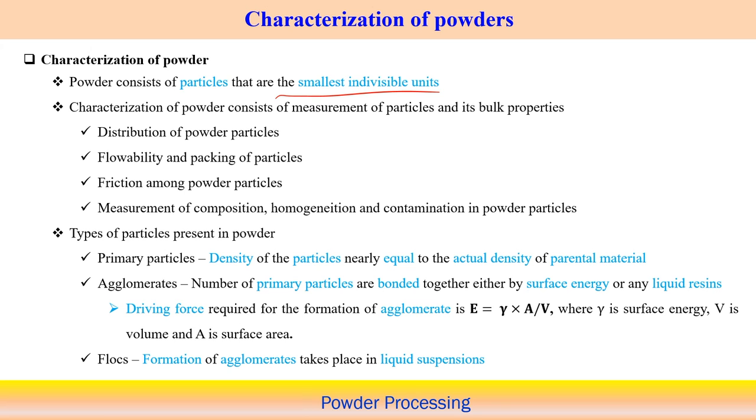Characterization of powders uses different methods to measure particle and bulk properties. One is distribution of powder particles — the frequency of maximum and minimum sizes, or the variation of particle size contained in a bulk material. Distribution of powder particles is a very important parameter to measure because it is not possible to manufacture exactly the same particle size; there must be some variability.